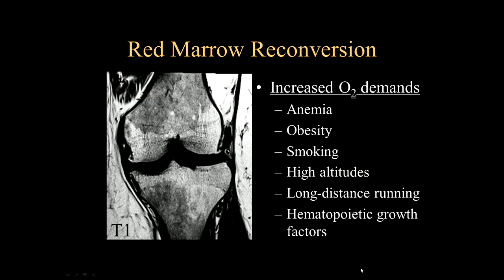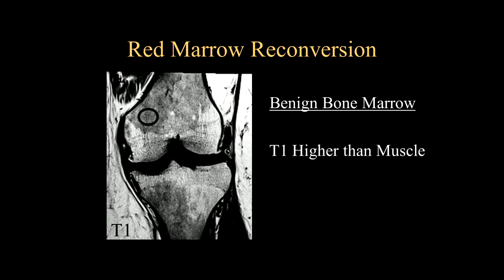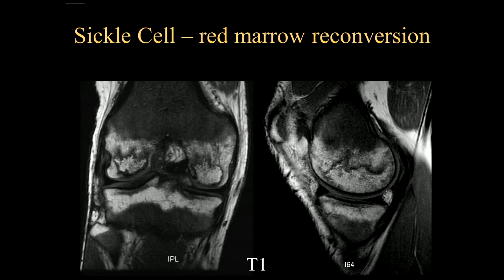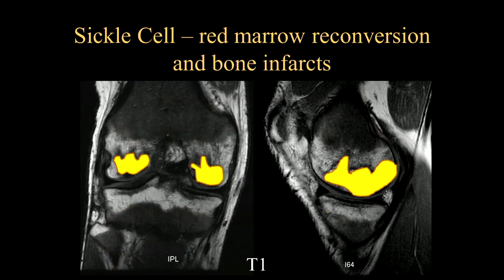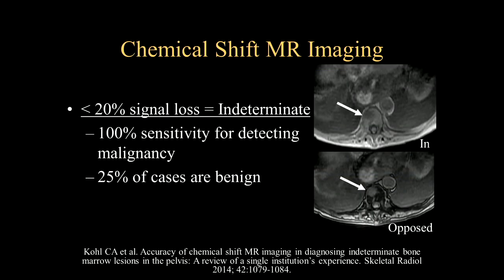So why does red marrow reconversion occur? There are multiple diseases beyond sickle cell and thalassemia where you have increased oxygen demands. Any type of anemia can cause this, as can obesity, smoking, and high altitudes. So it's not a really specific finding. On T1, you want to see signal that's a little bit lower than fatty marrow but typically higher than skeletal muscle, though sometimes it can be much lower in signal. Here's a case of red marrow reconversion — you can see predominantly red marrow throughout the distal metaphysis in the femur and the proximal tibial and fibular metaphyses. But look at the articular surfaces — there are bone infarcts throughout both the medial and lateral femoral condyles.